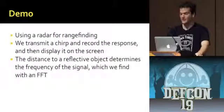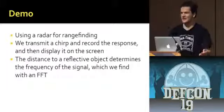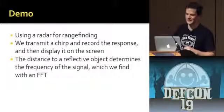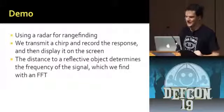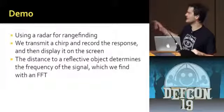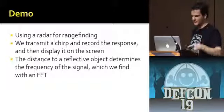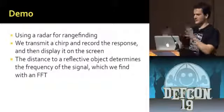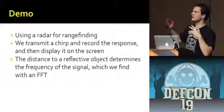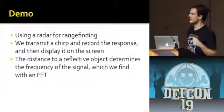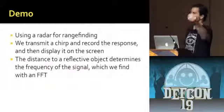I'd like to try a demo now — I really hope this works, but I know how demos work at DEF CON. Basically what we're going to do is a range-finding demo. I'm going to take this thing and set it up to generate a chirp, record the response, and display it on the screen. There will be a couple of plots and I'll describe those when they come up. What you should be able to see is the distance to a wall or something coming up as a stronger signal at some range, plotted with respect to range. All that processing is done with an FFT.